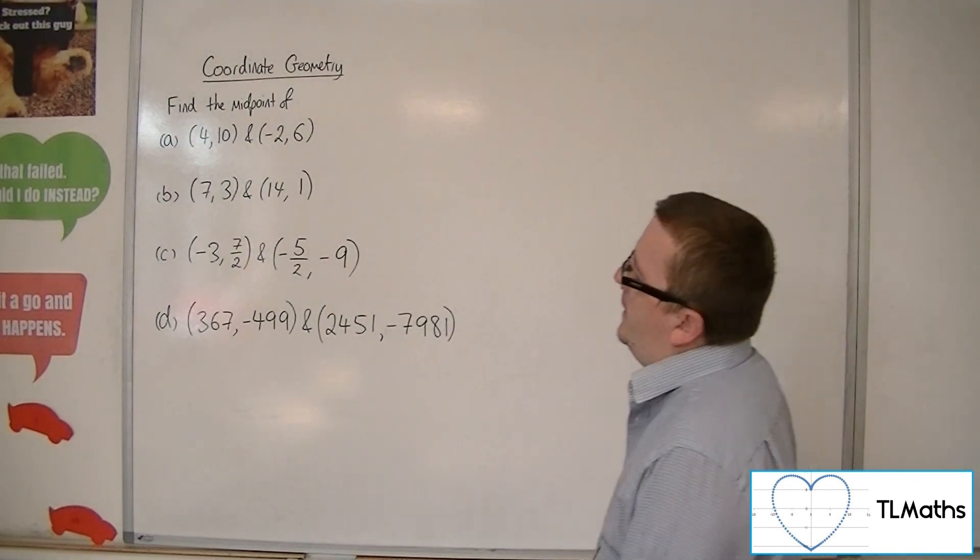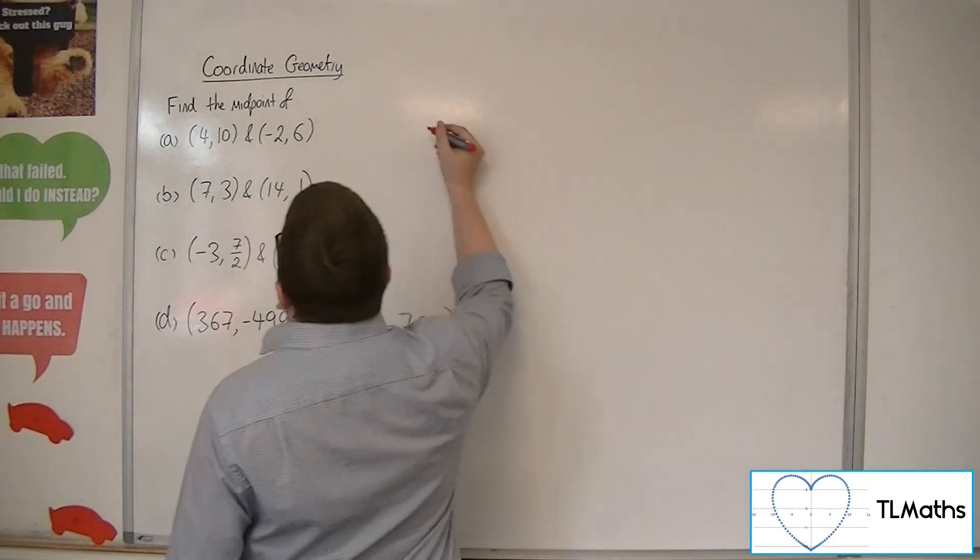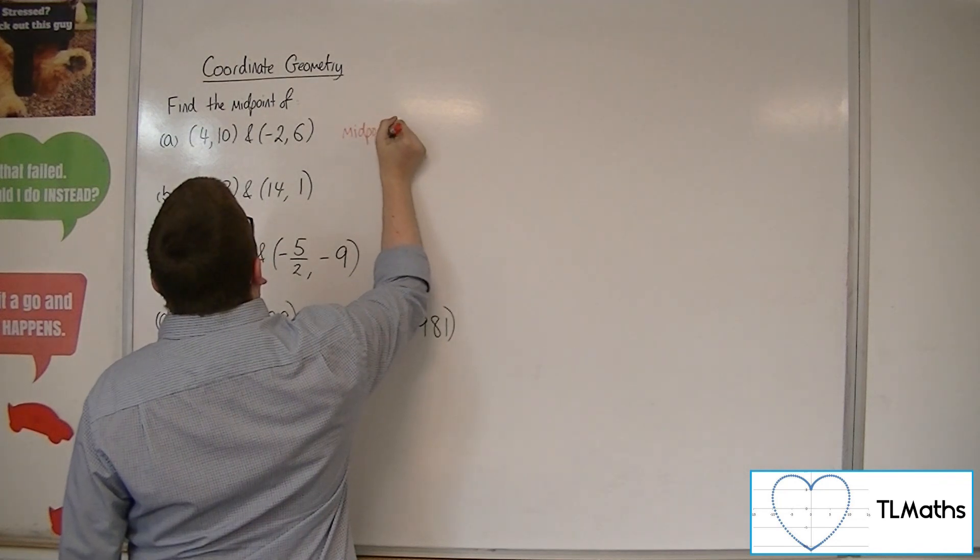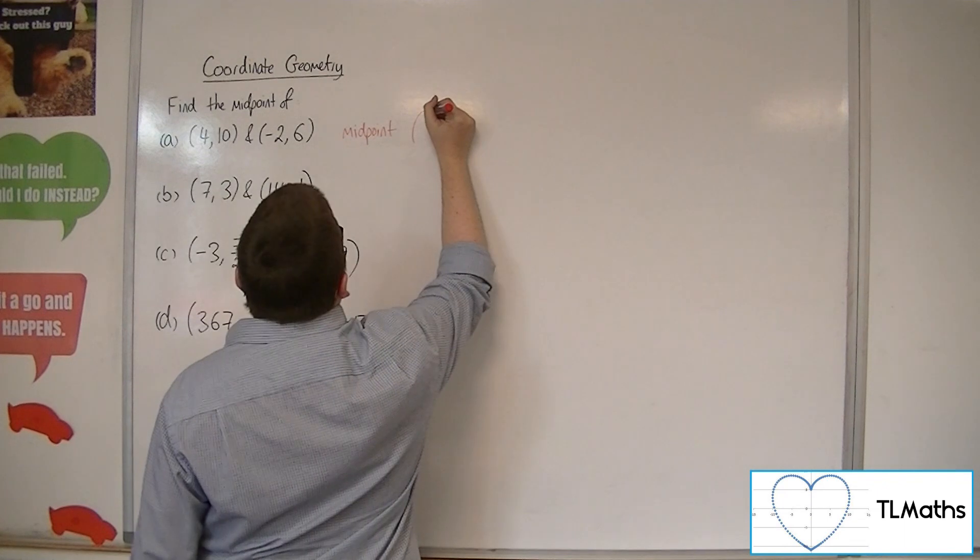Let's start with A. We've got 4, 10, and minus 2, 6. What you want to do to find the midpoint is to find the average of the x-coordinates and the average of the y-coordinates. So you add them together.